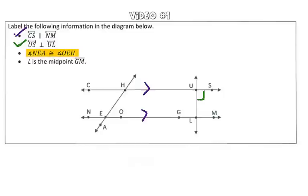Next we're told that angle NEA is congruent to angle OEH. So to show that two angles are congruent, we use those arc marks. So I'm going to put those here for NEA and OEH. Remember, you can always vary that. You can put tick marks on these arc marks if you wanted to.